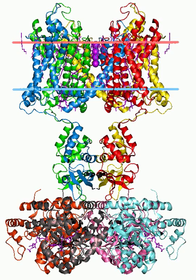Inwardly rectifying channels pass current more easily in the inward direction into the cell from outside. These include KVα11, Ether-à-go-go potassium channels such as KV11.1 (KCNH2), KV11.2 (KCNH6), and KV11.3 (KCNH7). Slowly activating channels include KVα12, KV12.1 (KCNH8), KV12.2 (KCNH3), and KV12.3.